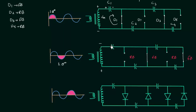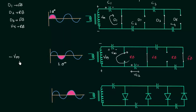The voltage across capacitor C1 remains Vm, and we can now calculate the voltage across capacitor C2. This plate is positively charged and this plate is negatively charged. Applying Kirchhoff's voltage law: minus Vm minus Vm plus Vc2 equals 0. So Vc2 is equal to twice of Vm. The voltage across capacitor C2 is equal to 2Vm.